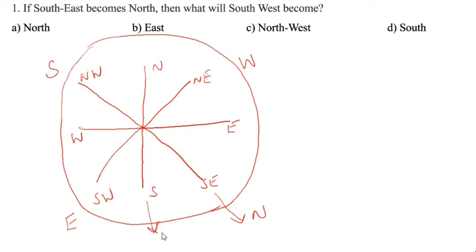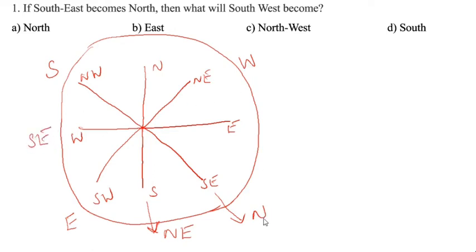After that, how will we get the diagonal directions? This is N and E, so you can write N-E. Here is S and E, so you can write S-E. Here is W and N, so you can write N-W. Here is S and W, so you can write S-W.